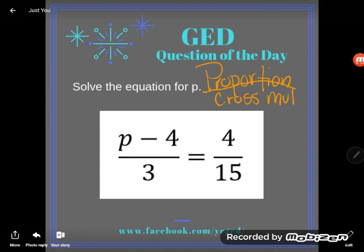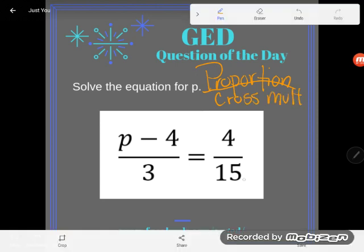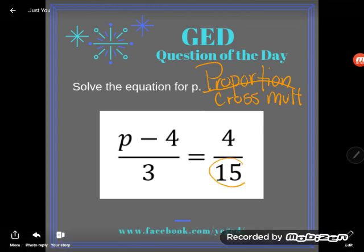Cross products are equivalent. So that's what I'll do. The first thing I'm going to do is multiply the denominator of this fraction by the numerator of the other fraction. I'm multiplying across.